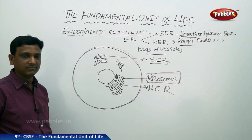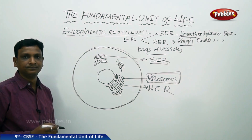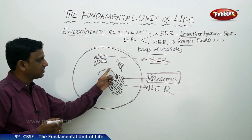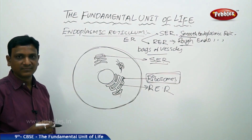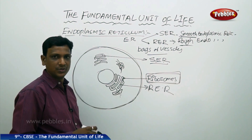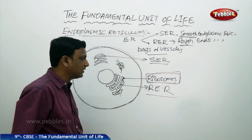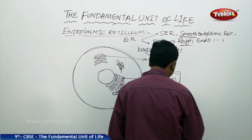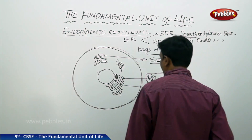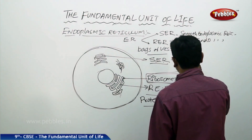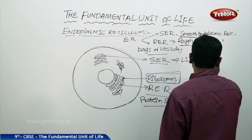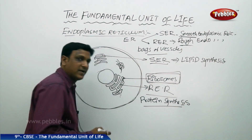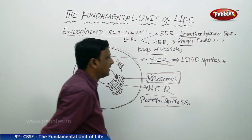Structurally they vary, but everything is called endoplasmic reticulum. There is also a functional difference between them. The rough endoplasmic reticulum is involved in protein synthesis, while the smooth endoplasmic reticulum is involved in lipid synthesis — it manufactures lipids.